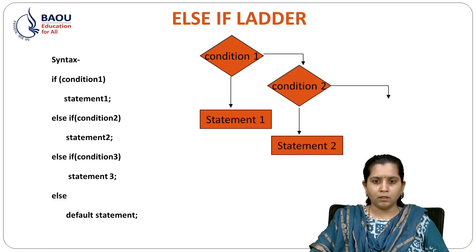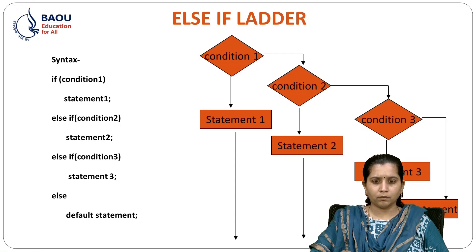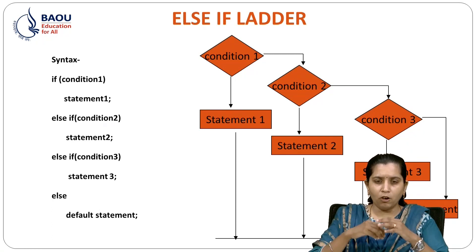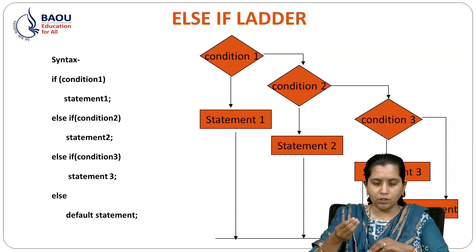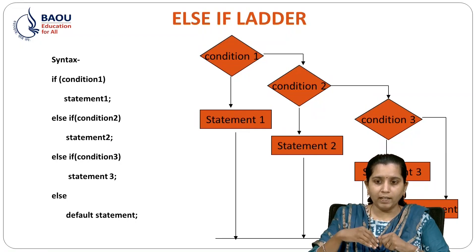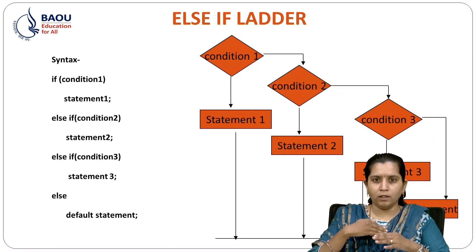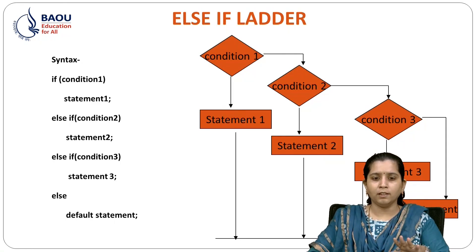Let's see the ELSE IF ladder flowchart. First IF condition is checked — if it is true, then the IF block will be executed. Second is the ELSE IF condition — if the first condition fails, then this ELSE IF block will be executed. If the ELSE IF condition of the previous one is not satisfied, then CONDITION 3 will be executed, and likewise the fourth. If any of these statements will not be executed, then the ELSE statement will be executed.